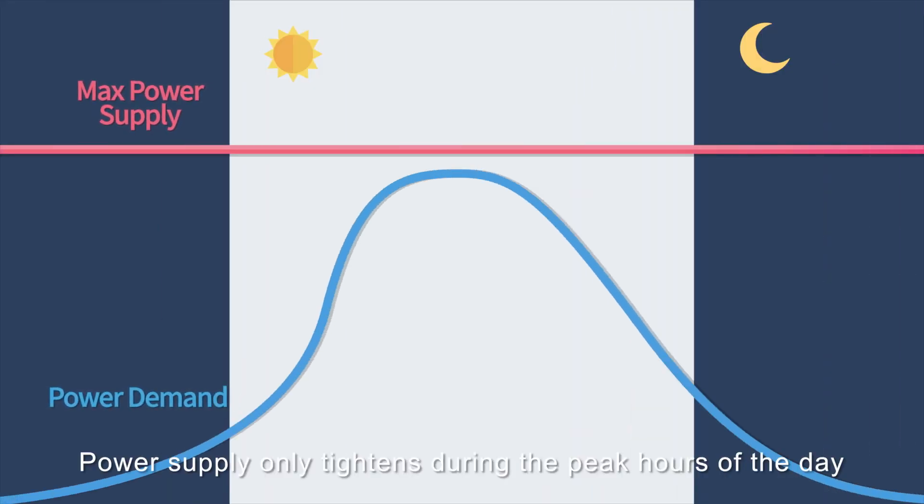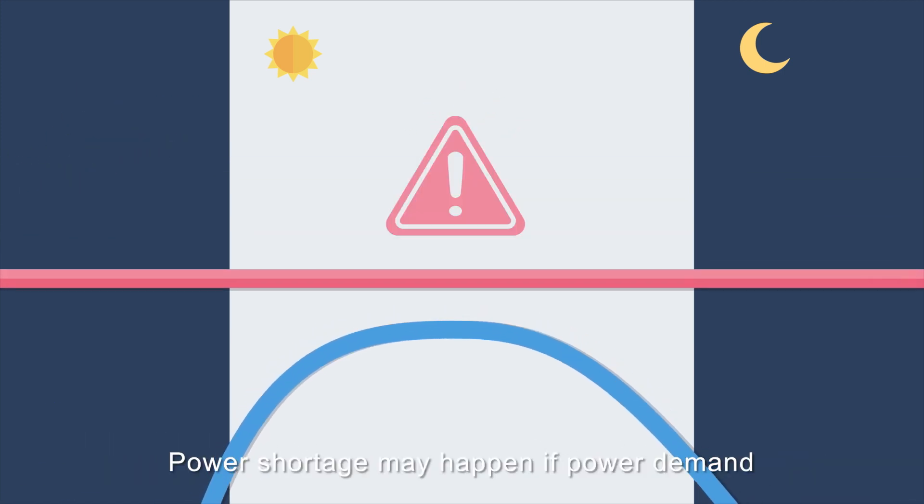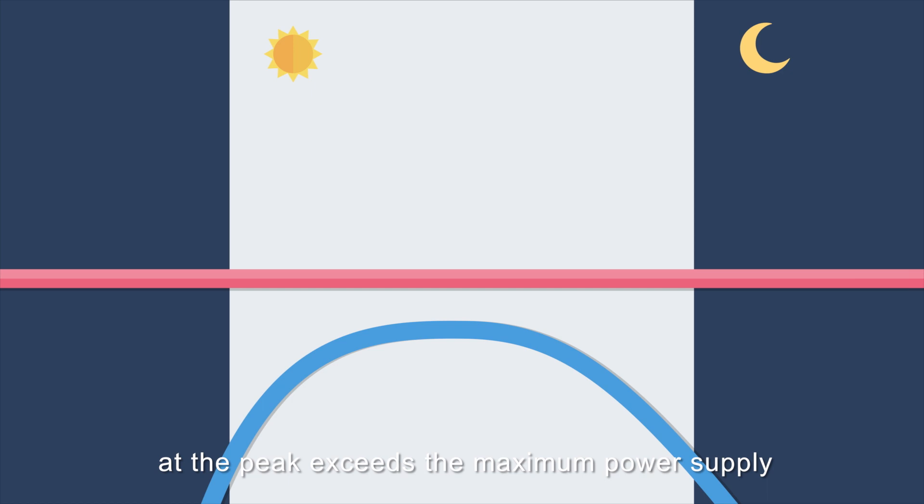Power supply only tightens during the peak hours of the day. Power shortage may happen if power demand at the peak exceeds the maximum power supply.